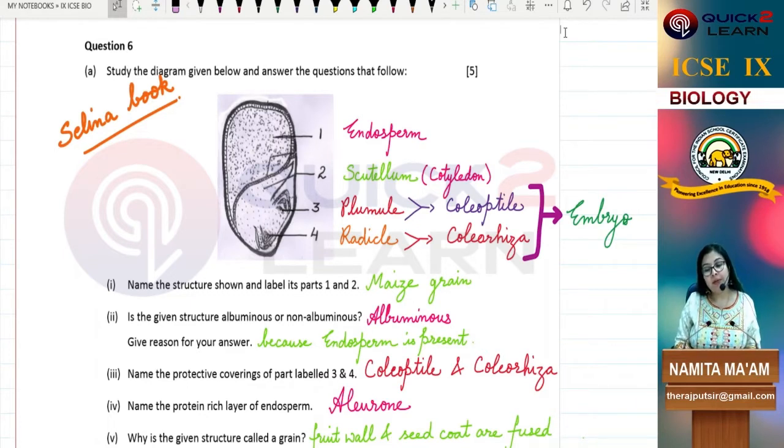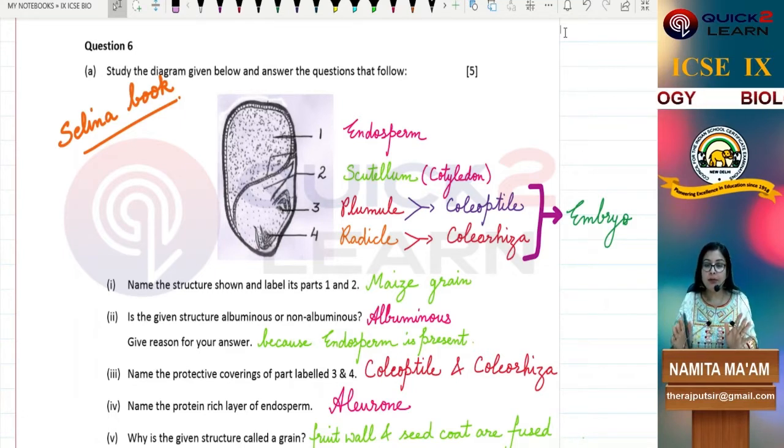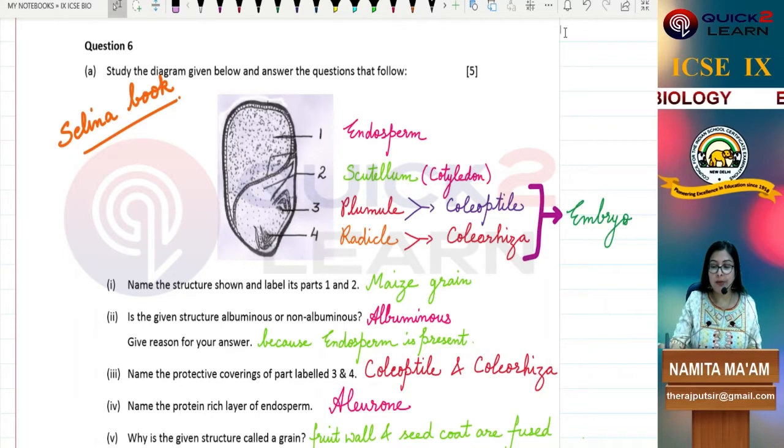Let us start. Question number 6 is: study the diagram given below and answer the questions that follow. Again, same thing I'm repeating, the diagram as it is from Selina book. Copy of your diagram is Selina book diagram. You can see this diagram is maize grain diagram, one, two, three, four - four structures.